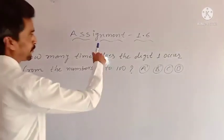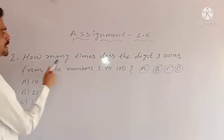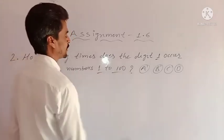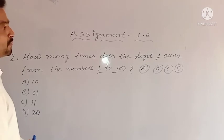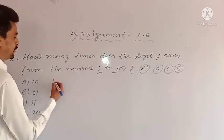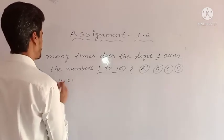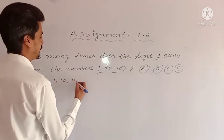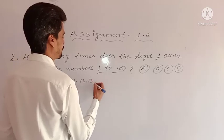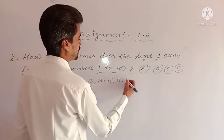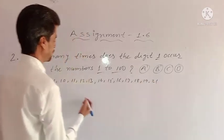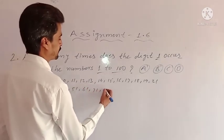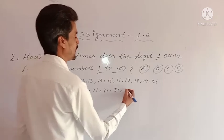The second problem: how many times does the digit 1 occur from the numbers 1 to 100? Let's see: 1, 11, 21, then 10, 11, 12, 13, 14, 15, 16, 17, 18, 19, 21, 31, 41, 51, 61, 71, 81, 91, and 100.